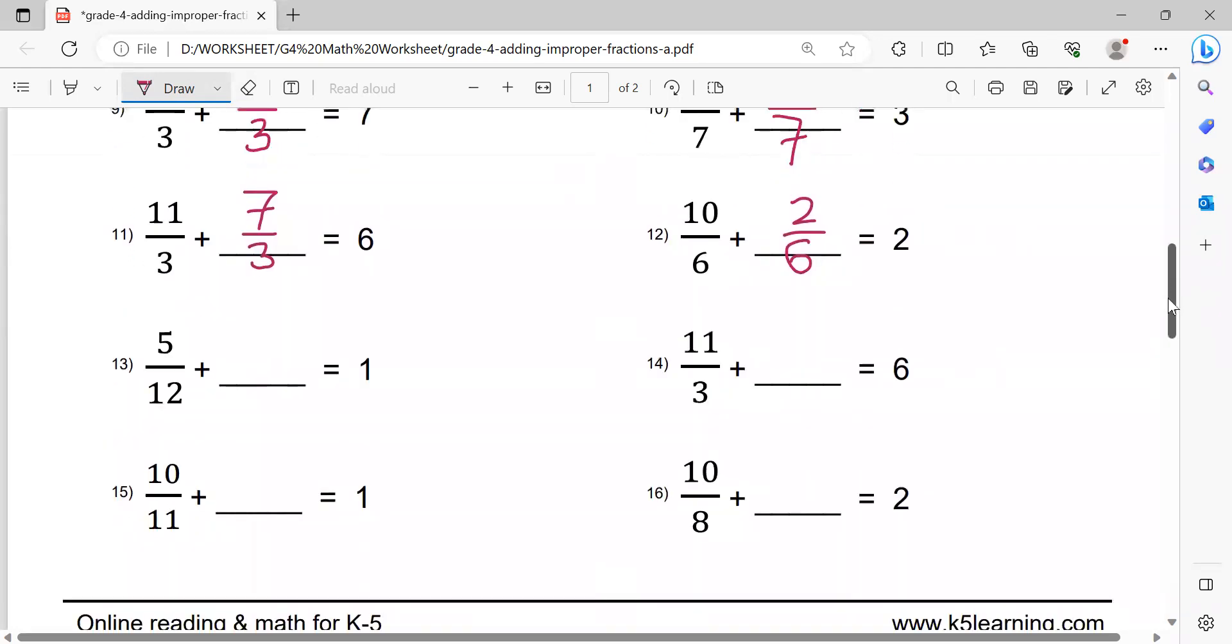Next. 12 times 1, how much? 12. And then 12 minus 5 equals 7. 7 over 12.